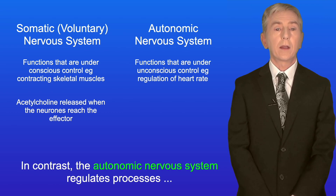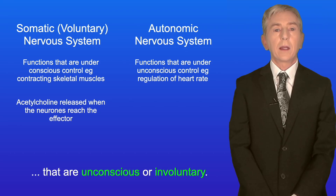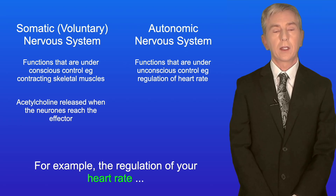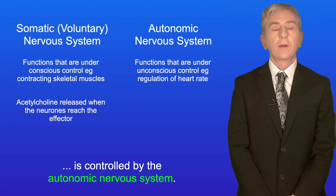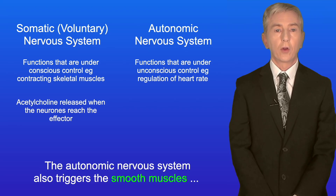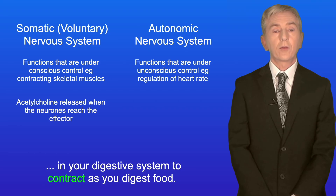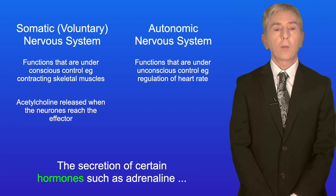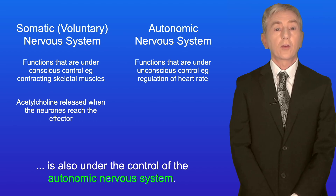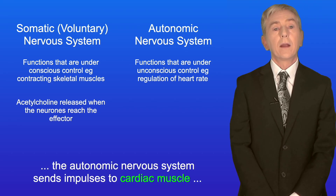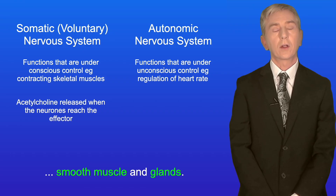In contrast, the autonomic nervous system regulates processes that are unconscious or involuntary, and it operates all the time. For example, the regulation of your heart rate is controlled by the autonomic nervous system. It also triggers the smooth muscles in your digestive system to contract as you digest food, and the secretion of certain hormones such as adrenaline is also under the control of the autonomic nervous system. So in contrast to the somatic nervous system, the autonomic nervous system sends impulses to cardiac muscle, smooth muscle, and glands.